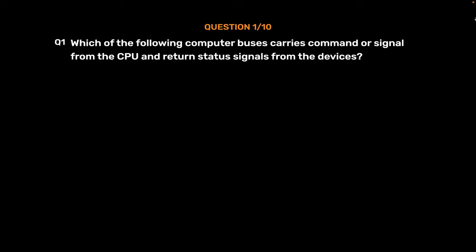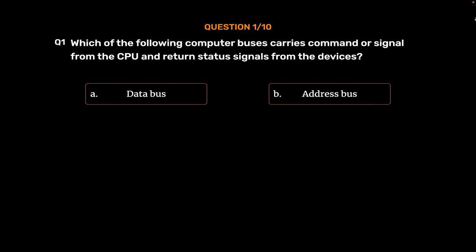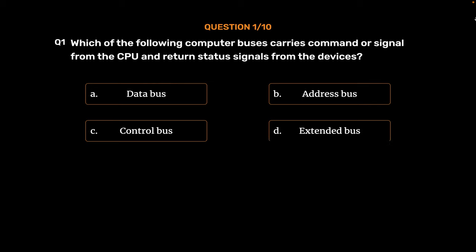Which of the following computer buses carries command or signal from the CPU and returns status signals from the devices? Option A: Data Bus. Option B: Address Bus. Option C: Control Bus. Option D: Extended Bus. The correct answer is Option C.